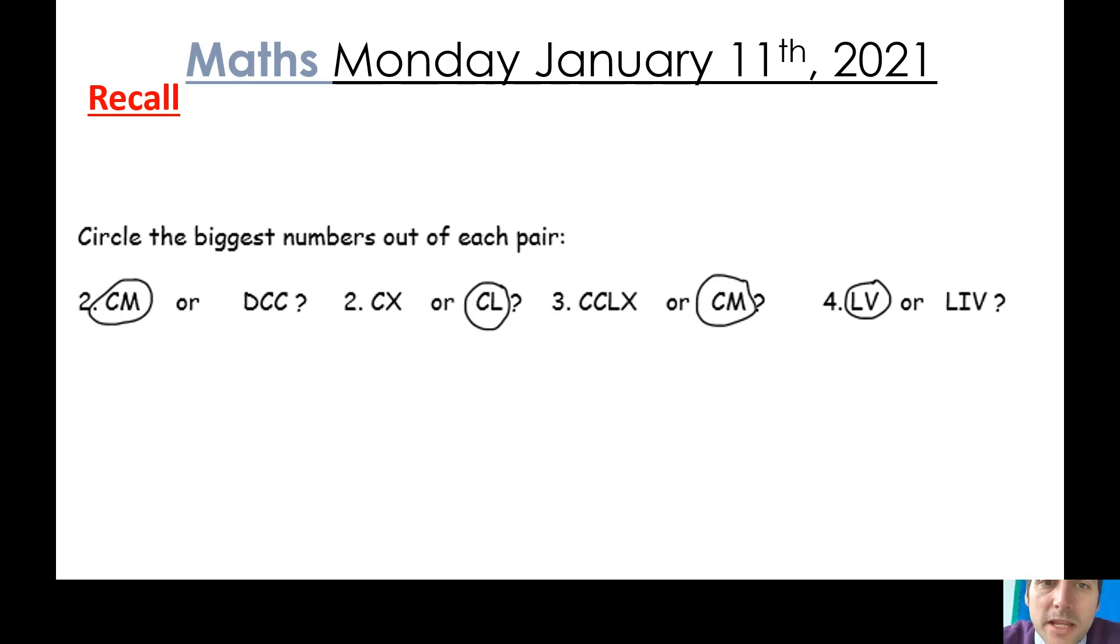CX would be 110, which is less than CL. CL being 150. CCLX is 260, which is less than 100 less than 1000, which is 900. So 900 is greater than 260.